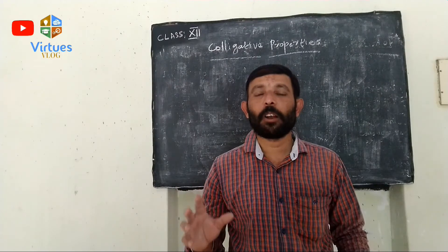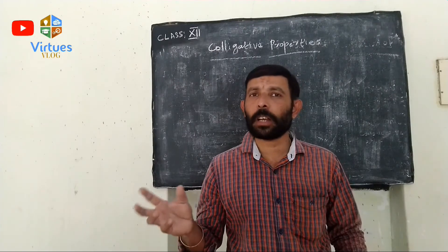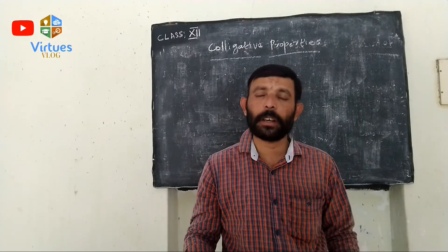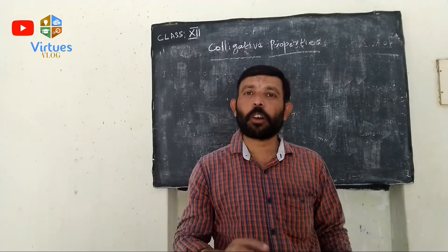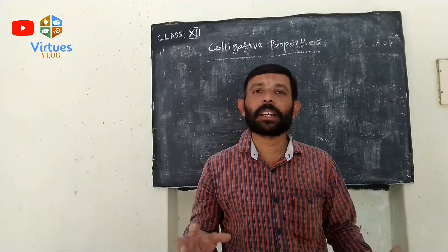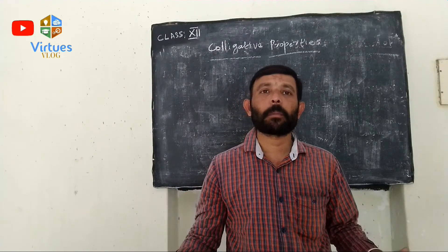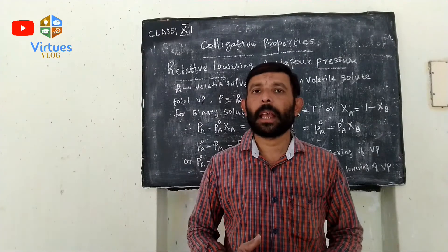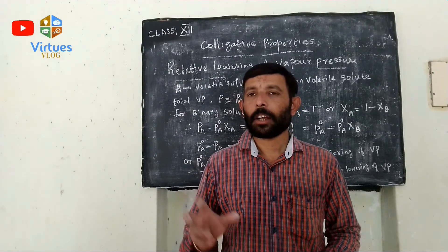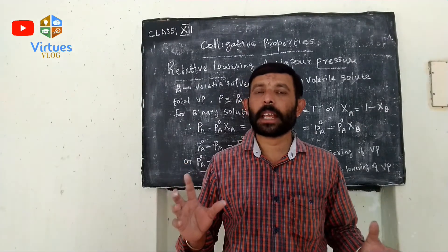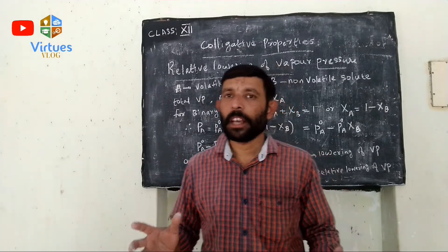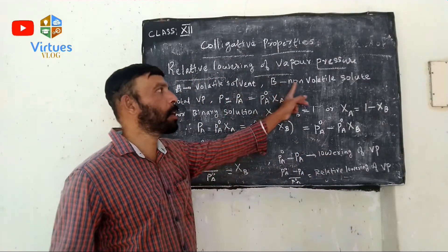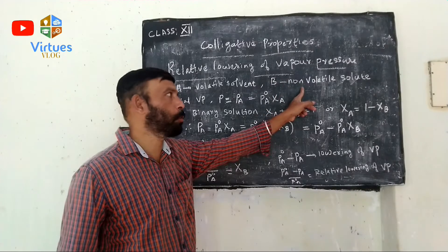This lowering of vapor pressure of a solution, when compared to pure solvent, is called relative lowering of vapor pressure. We consider a binary solution consisting of two components A and B, where A is the volatile solvent and B is the non-volatile solute.